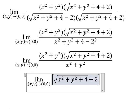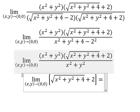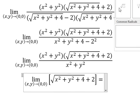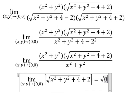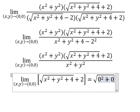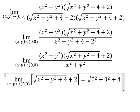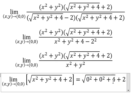And now we can put 0 here and here, and we got the final answer. The square root of 4, we have 2. 2 plus 2, we have 4.